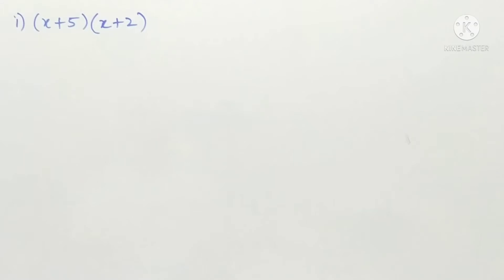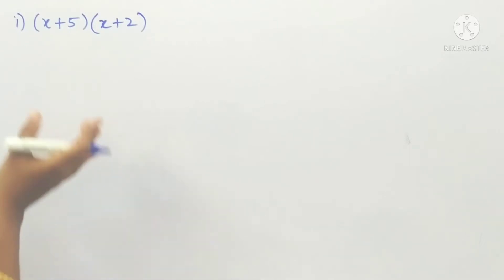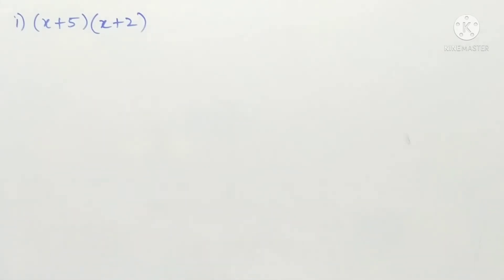Hello students, welcome to my channel. Today we are going to see Exercise 2.5 problems from our second chapter. The first problem is: use suitable identities to find the following products. There are 5 problems total, and we have to use suitable algebraic identities to calculate each value without doing actual multiplication.